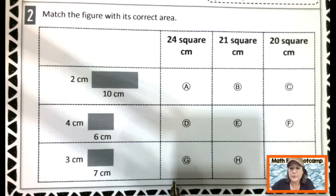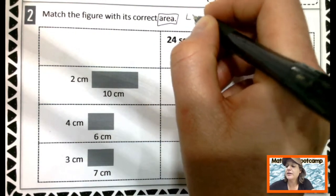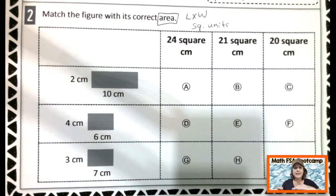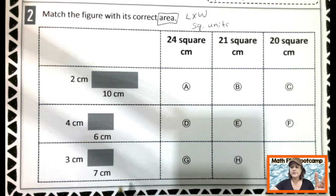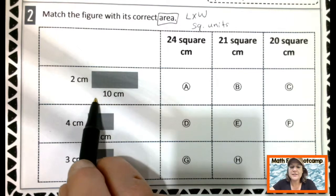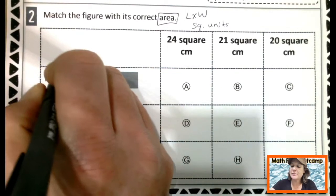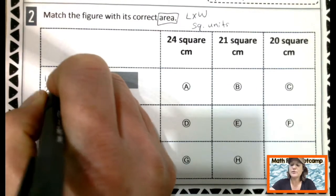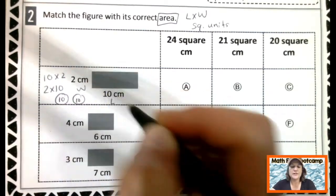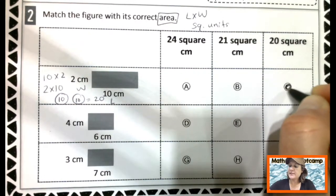Let's look at number two. Number two. It says match the figure with its correct area. Again, when I think of area, I think of length times width and remembering to write square units. So when I'm finding the area, I'm multiplying the length times the width. I'm going to solve this two different ways, each one. I'm going to use a model and then I'm also going to use the multiplication mashup. So here we have our length is ten. Our width is two. So now we have ten times two. I'm going to change it to two times ten. I'm going to use the commutative property there and do two groups of ten, which would be ten plus ten, which is what? Twenty. So it is twenty square centimeters.